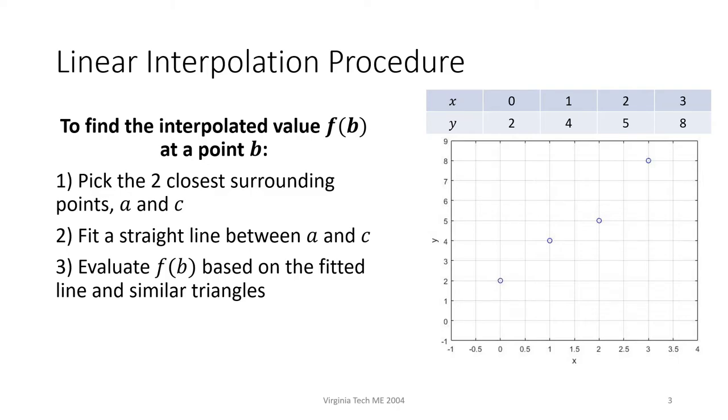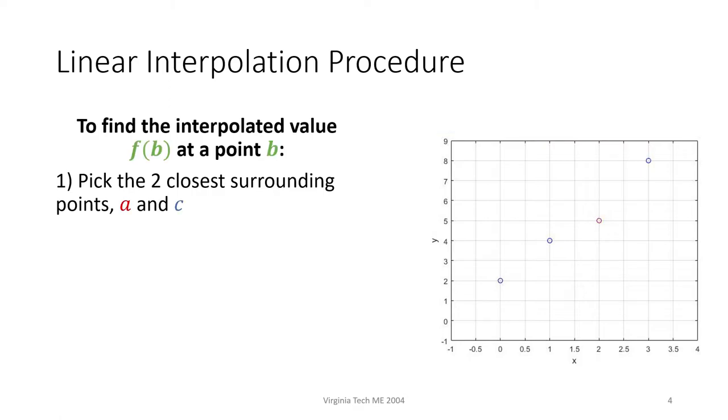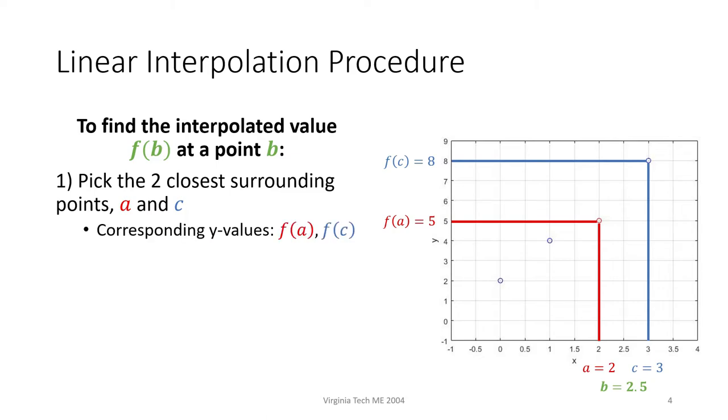I'll go through each of these steps using the data from this slide and the previous slide. For step 1, we need to find the two closest surrounding points, a and c. Let's say we choose b equals 2.5. This means that we should pick a equals 2 and c equals 3. I've shown a in red and c in blue, along with their corresponding y values.